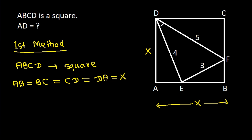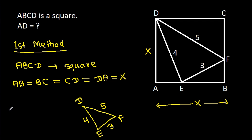In triangle DEF, DE is 4, EF is 3, and DF is 5. We know that 4² + 3² = 5², which means the angle DEF will be 90 degrees.